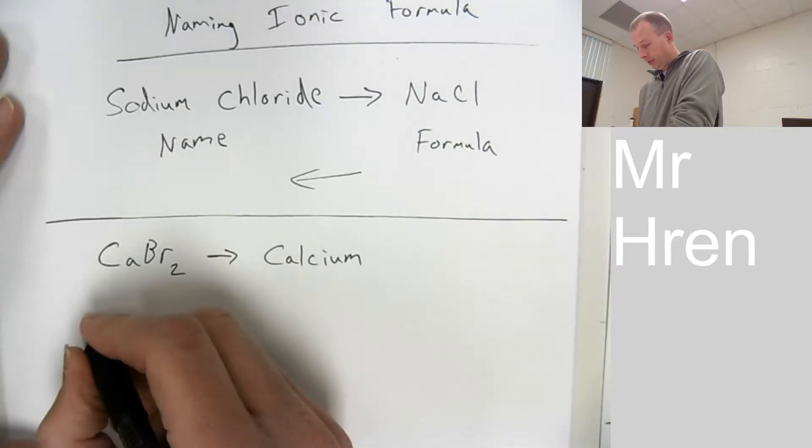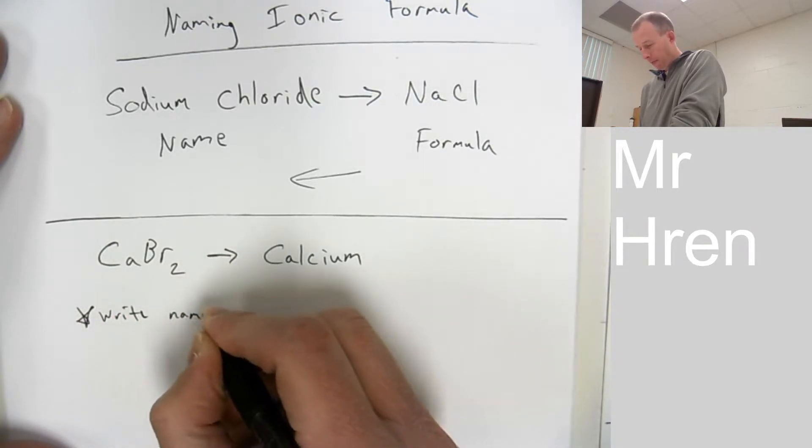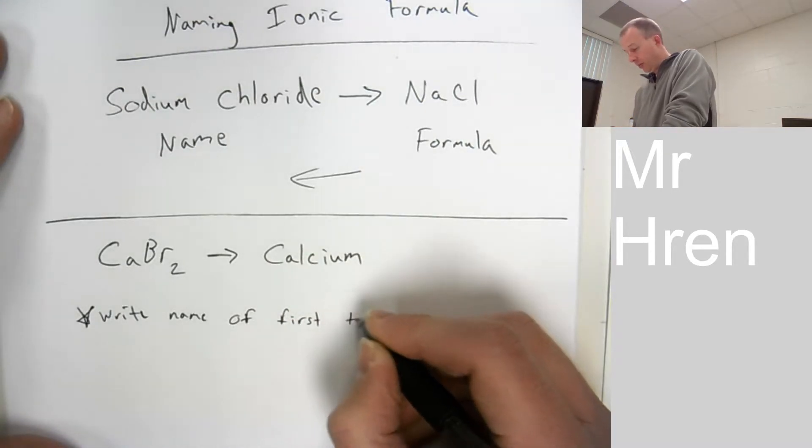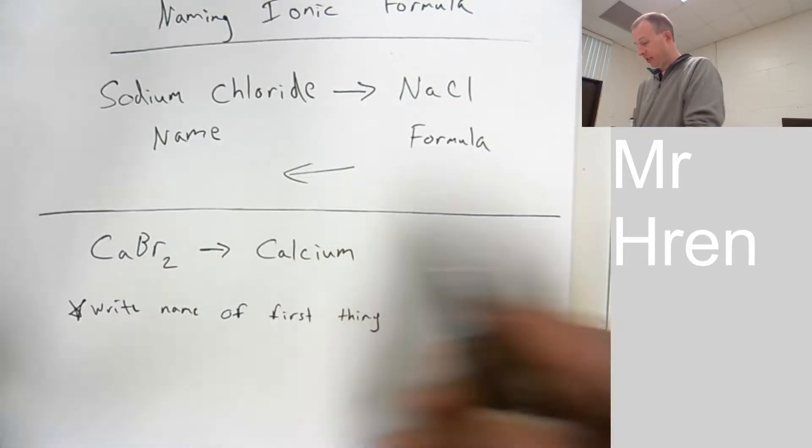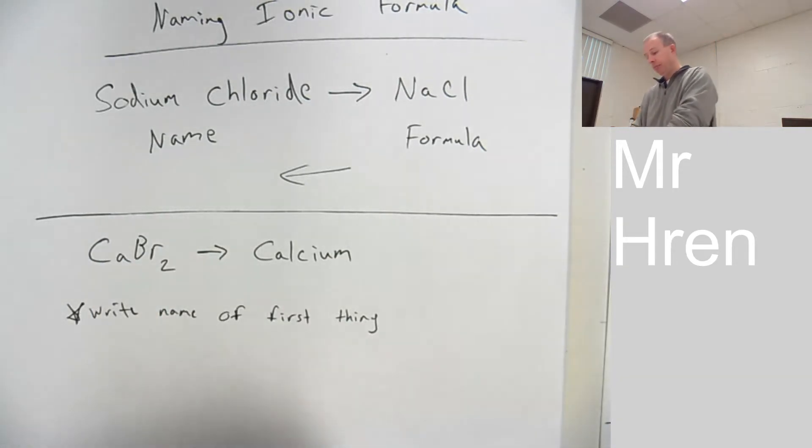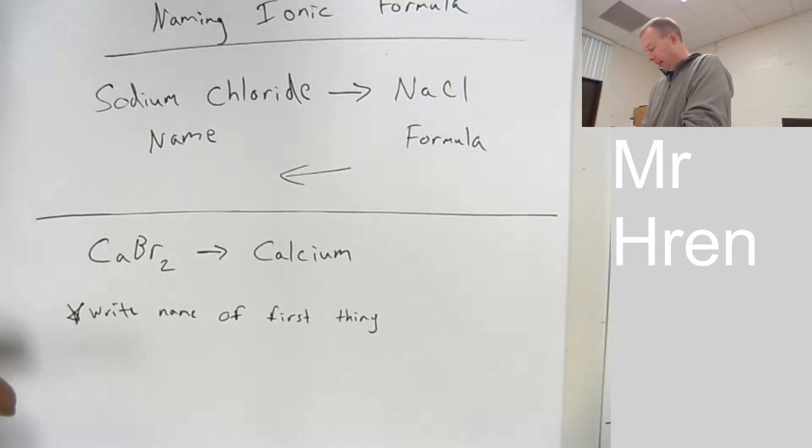Then you can write the name of the first thing, because it's not always going to be just an element. It might be a polyatomic ion. It might be ammonia. So, really, you'd say write the name of the cation, because that's a positive ion. That's not a term we've been using a lot, so I'm not specifically saying that. Write the name of the first thing. So, just write calcium. Done. Simple. Doesn't matter however many you have. You do not indicate subscripts.